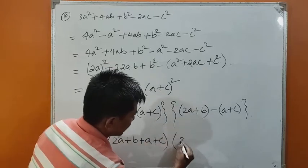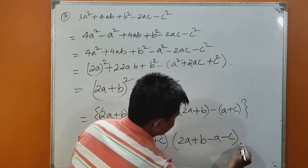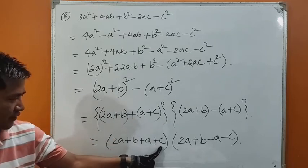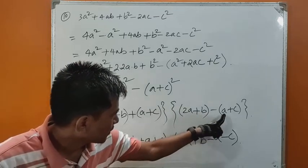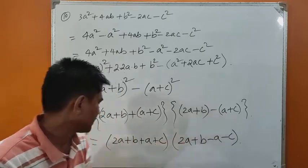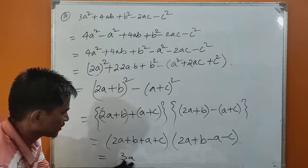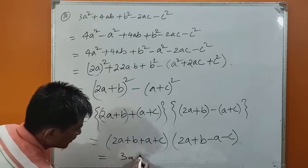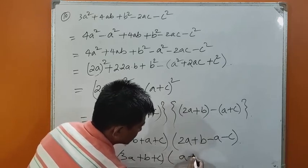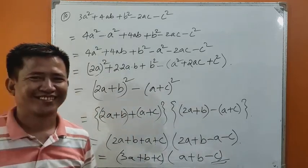Expanding: the first factor is 2a plus b plus a plus c, and the second factor is 2a plus b minus a minus c. In the first bracket, 2a plus a is 3a, giving 3a plus b plus c. In the second bracket, 2a minus a is a, giving a plus b minus c. So the answer for question number 10 is 3a plus b plus c times a plus b minus c. Thank you so much for watching.